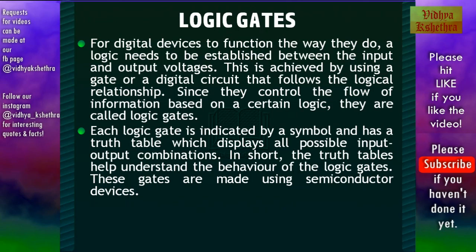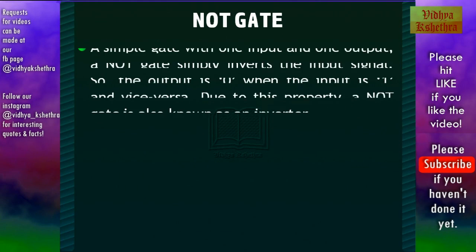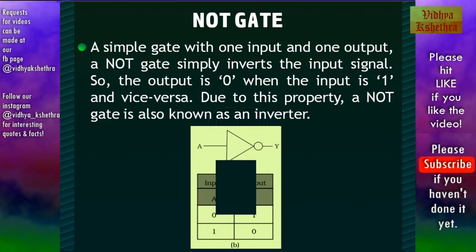The most commonly used logic gates are NOT, AND, OR, NAND, and NOR. The NOT gate is a simple gate with one input and one output — it simply inverts the input signal. So the output is 0 when the input is 1 and vice versa. Due to this property, a NOT gate is also known as an inverter. This figure shows the symbol and the truth table of a NOT gate.